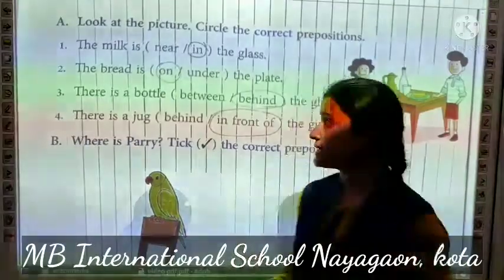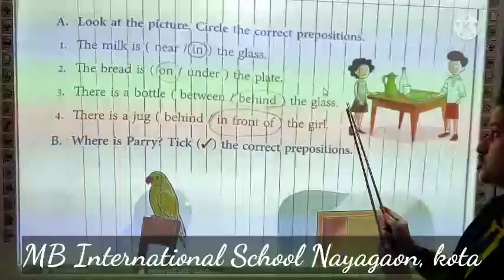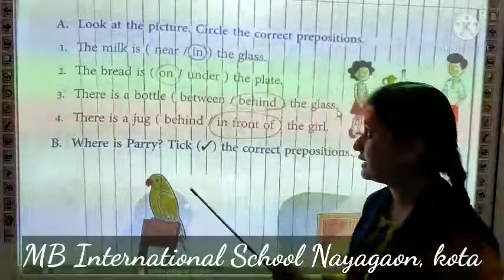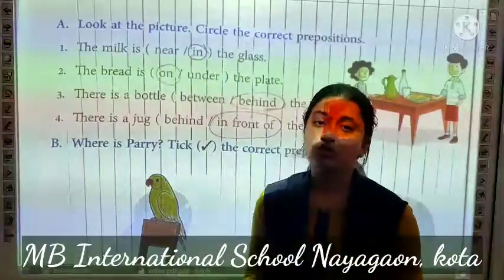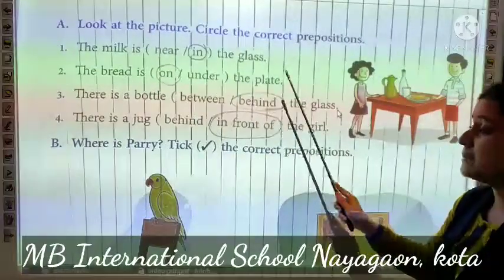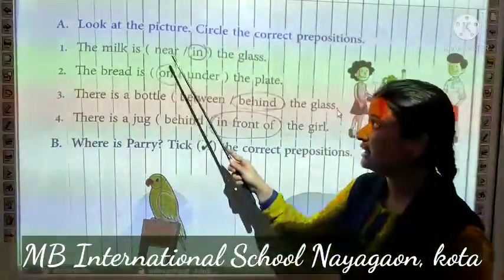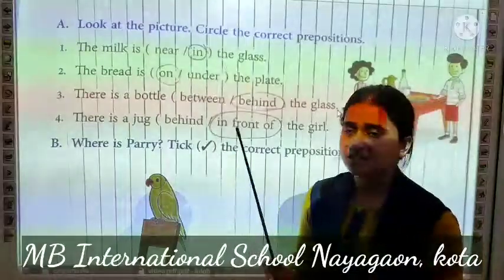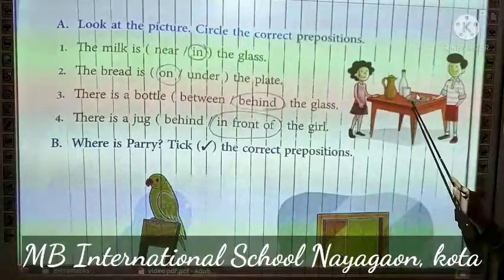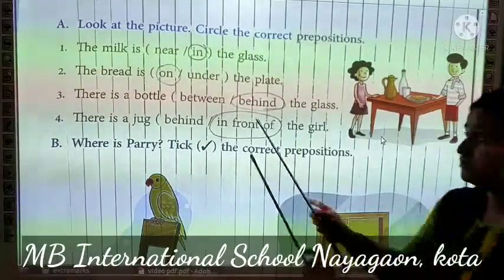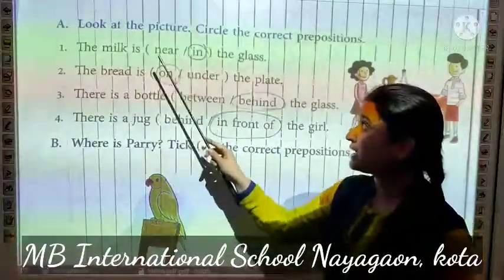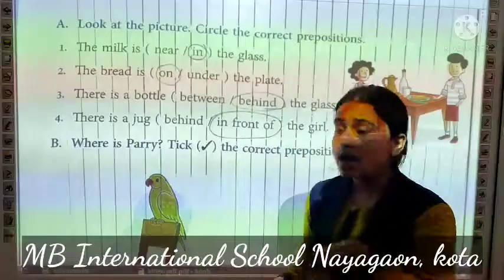Let's move to the exercise. Look at the picture, circle the correct prepositions. Aap ko is picture ko dhekna hai aur correct prepositions circle karna hai, ki joh noun or pronoun hai woh kaha pere hai. First, the milk is dash the glass. Yaha pere near ya in aayega. Near means pass, aur in matlab hota hai under. Picture mein milk pass nahi ho sakta, toh in aayega — the milk is in the glass, ki joh milk hai woh glass ke under hai.